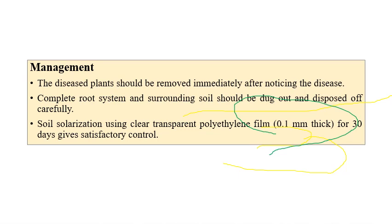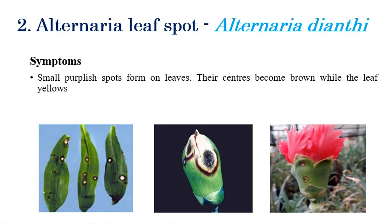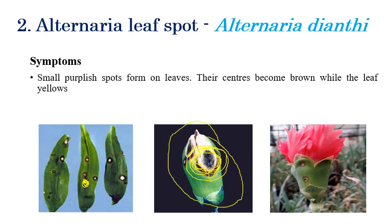The second disease is Alternaria leaf spot, caused by Alternaria dianthi. Small purple color spots can be seen on the leaves, and purple color spots with a black color center can be clearly observed on leaves and also on the flower bloom. Initially small purple spots appear on leaves; in later stages they completely turn brown and the leaf slowly turns yellow in color. The same symptoms can also be seen in the flower initiation area.